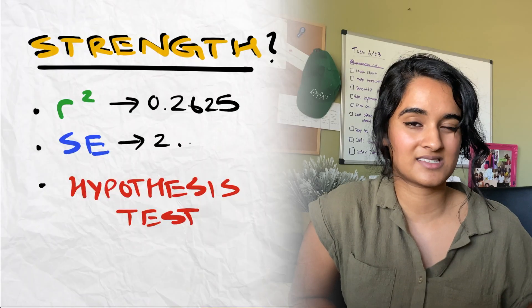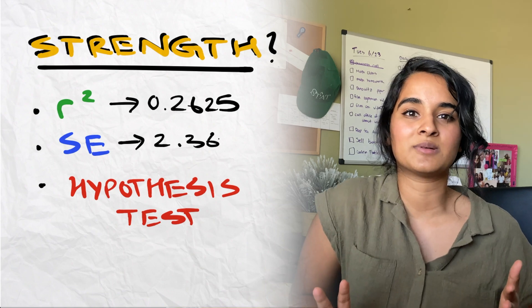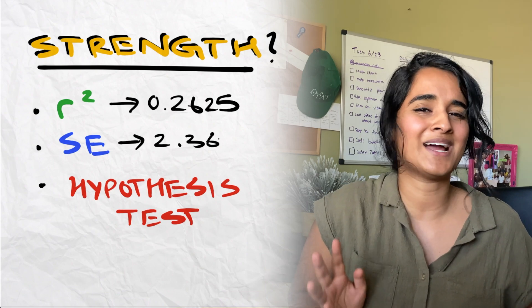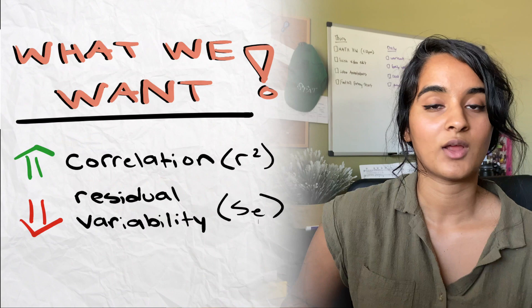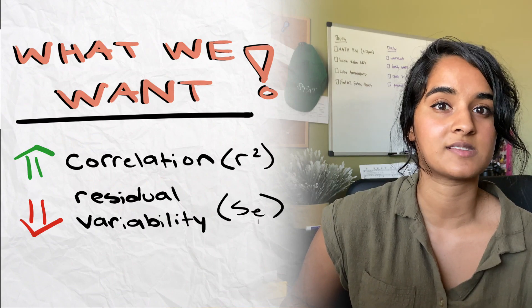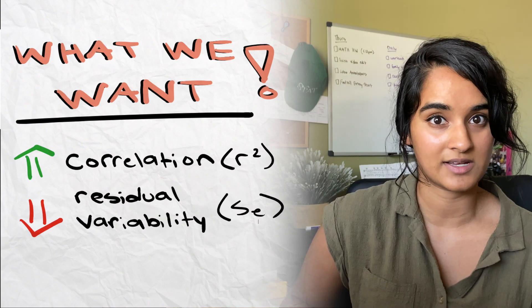Let's look at SE. SE is the standard deviation of residuals, also known as root mean square error. We want SE to be small because we want our variation of residuals to be small — the more spread out our residuals are, the worse, because we want data that's closer together for a better approximation. SE here is 2.36, which is a relatively small number, but these are numbers that are kind of ambiguous, so it's hard to say anything. Overall, we want a high R-squared and a low SE, but for this model we have a low R-squared and a low SE. So let's do a hypothesis test.